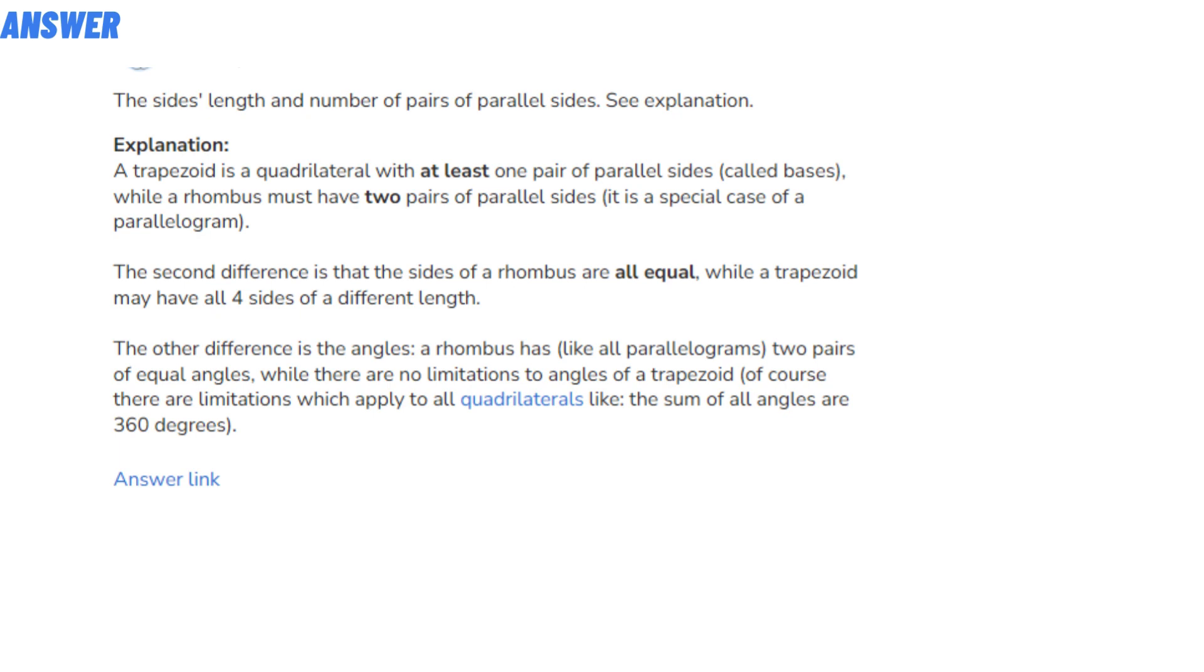The sides' length and the number of pairs of parallel sides. See explanation: A trapezoid is a quadrilateral with at least one pair of parallel sides (called bases),